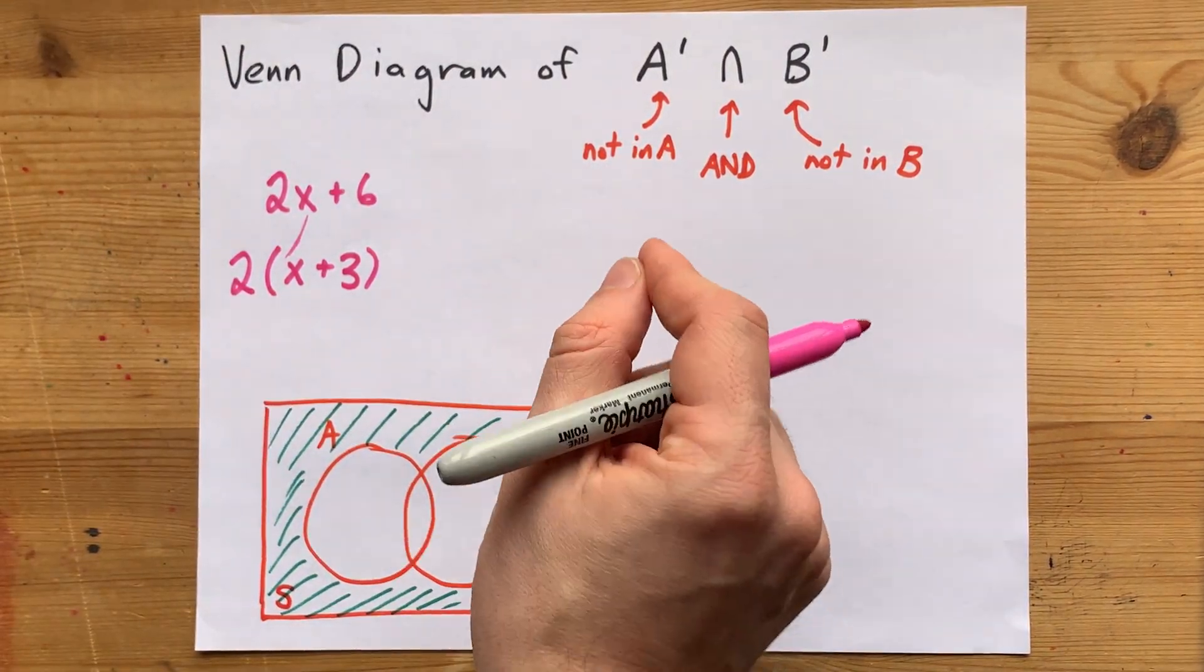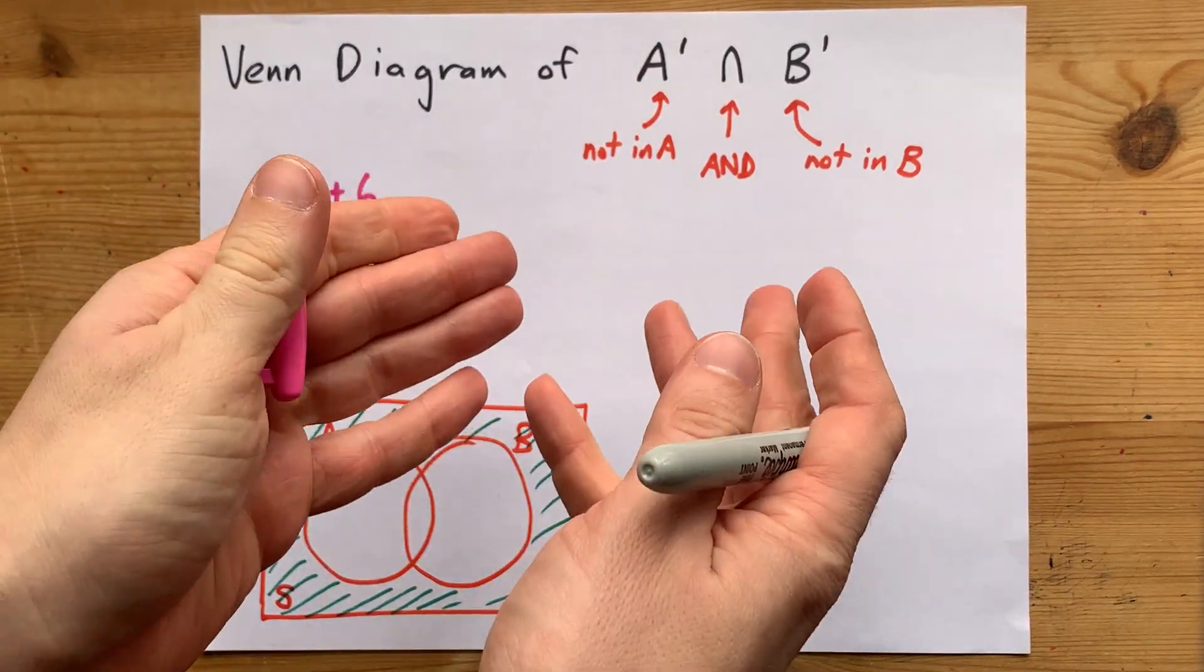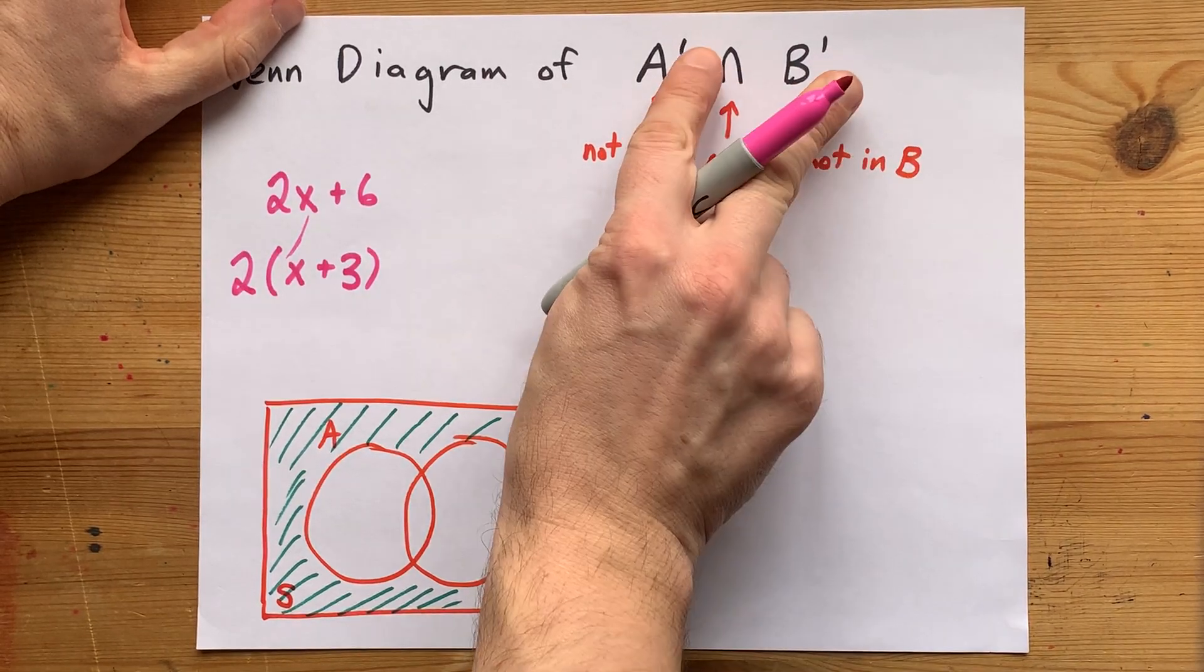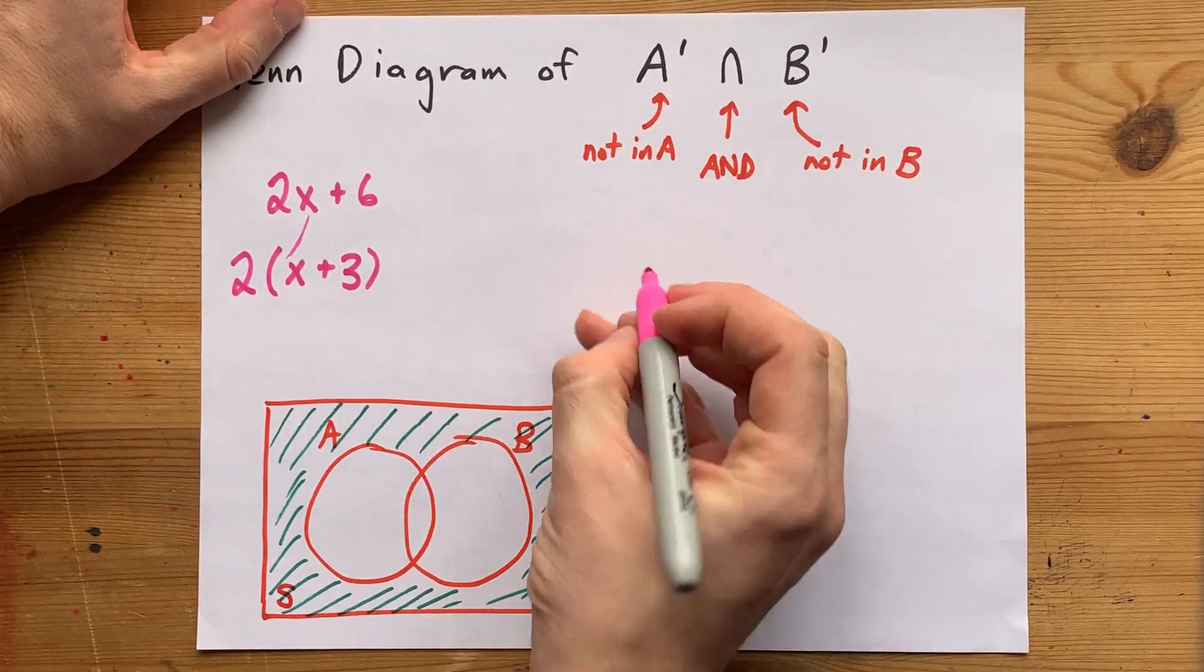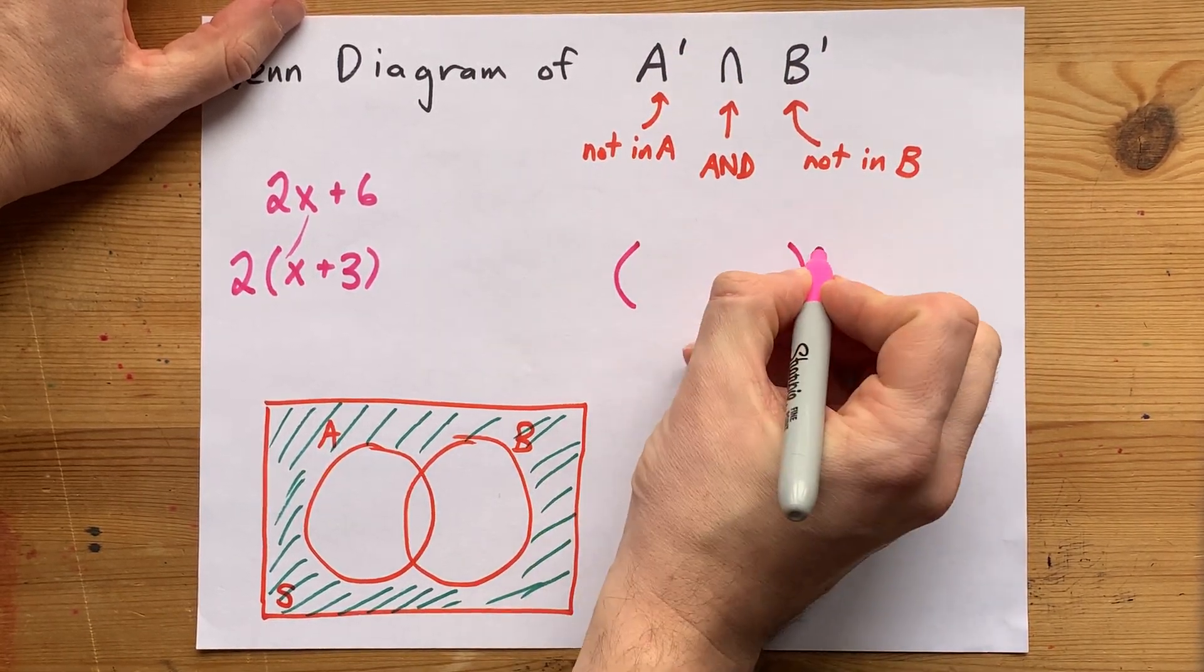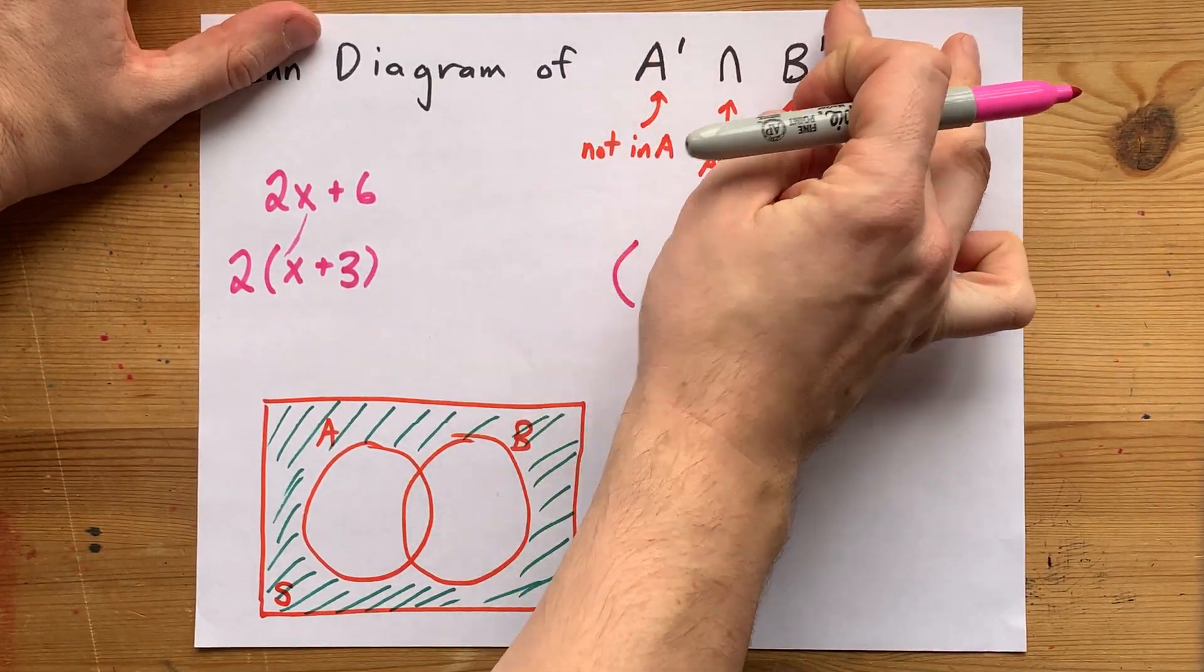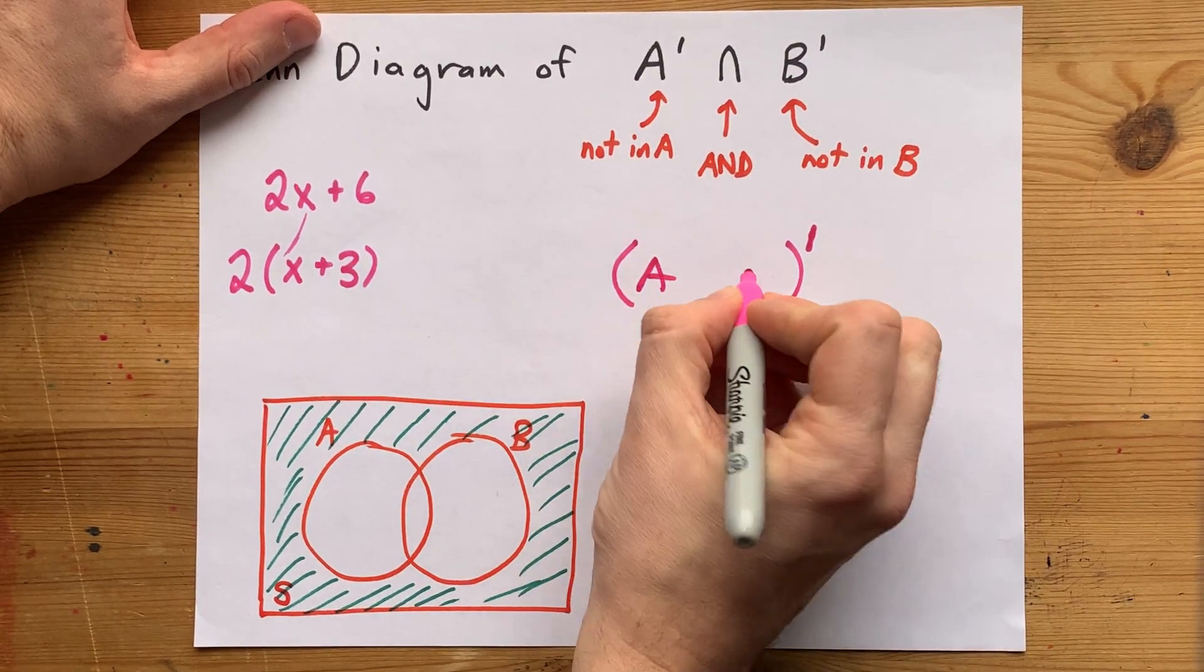You're actually allowed to, well, I don't know if you're mathematically allowed to, but this trick works. You're allowed to factor out a complement from both of these. I'm going to put them in brackets and put the complement on the outside. That's going to help me factor it out of both the A and the B, so I'm left with A and B.